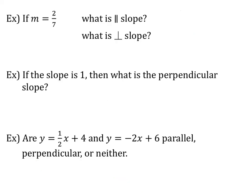Now let's look at these examples. If our slope is 2 over 7, what would the parallel slope be and what would the perpendicular slope be? Pause the video and see if you can answer these questions correctly. We know that parallel slopes are the same, so a parallel slope to 2 over 7 is also going to be 2 over 7.